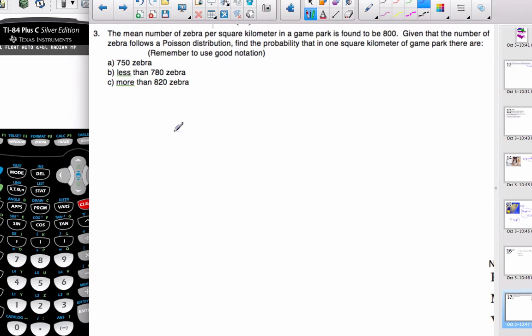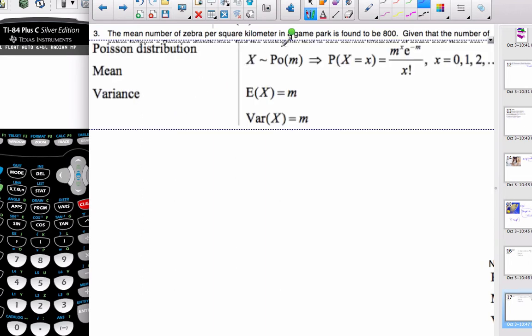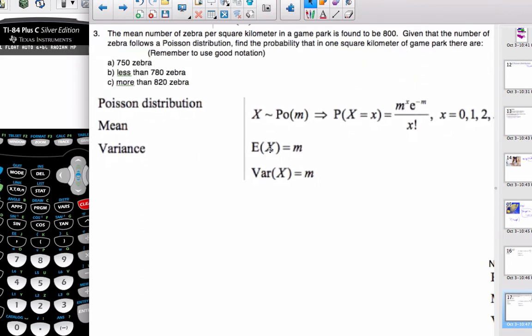Read the problem. We have zebras, and the mean per square kilometer is 800 zebras. Given the number of zebras follows a Poisson distribution, that's helpful to know. Find the probability that there are 750 zebras.